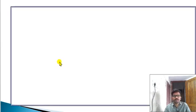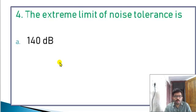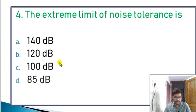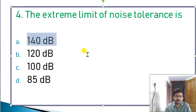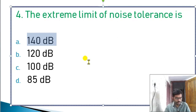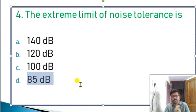The extreme limit of noise tolerance — options: 140 decibel, 120 decibel, 100 decibel, 85 decibel. The maximum extreme limit of noise is 140 decibel. The maximum recommended noise level is 85 decibel.